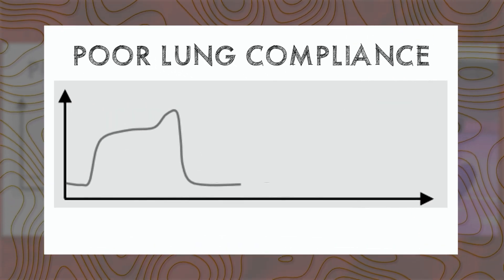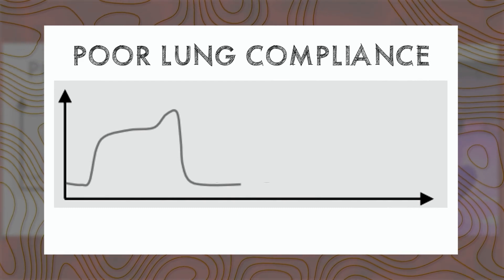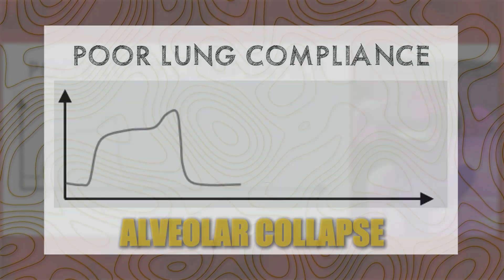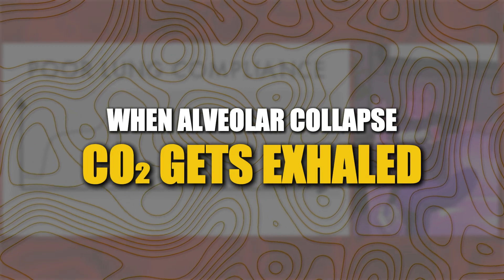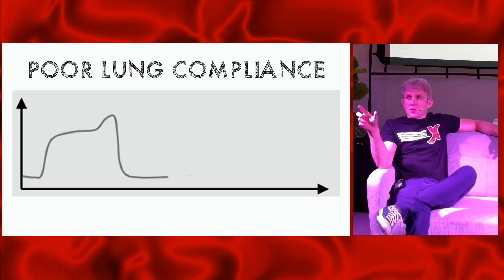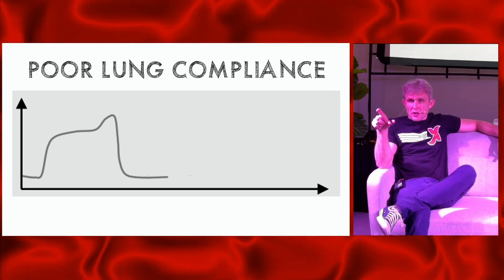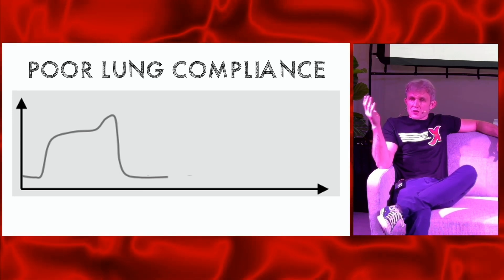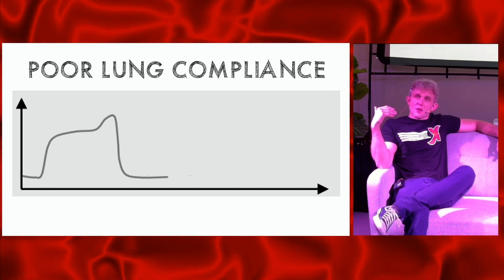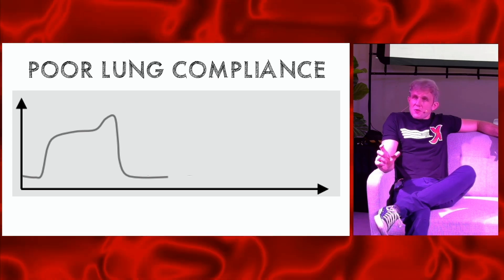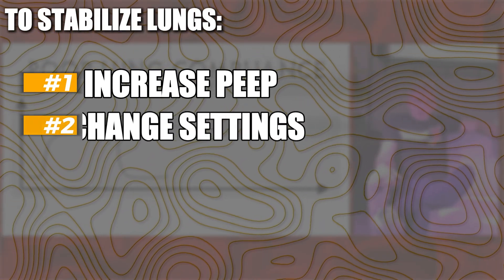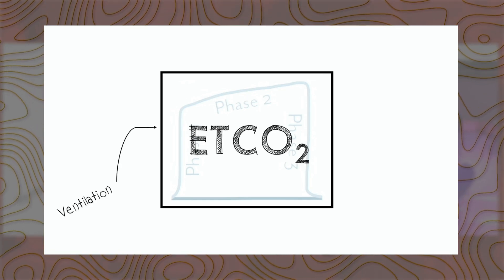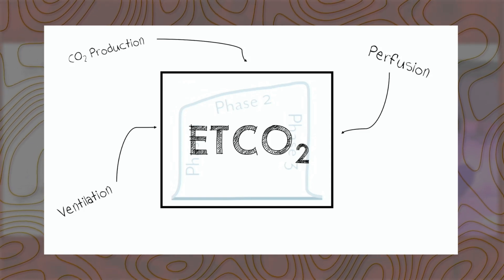The poor lung compliance waveform is seen in obesity and ARDS. You get your upstroke and plateau, but then alveolar collapse causes extra CO2 to be exhaled — CO2 that normally stays in the lung at FRC. This is indicative of poor compliance. As you recruit the patient's lungs you'll see this resolve, indicating the lung is stabilizing. If you see it, consider that your settings — whether APRV or otherwise — haven't fully stabilized the lung and think about increasing PEEP.